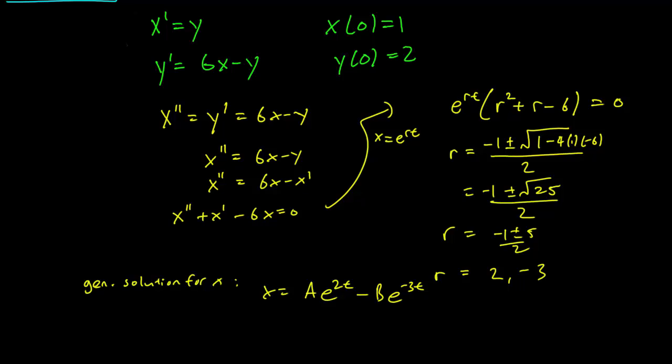And we can also find a way to get our y. Remember that y equals x prime. So y equals x prime, and so y is equal to the derivative of this is just 2A e to the 2t. The derivative of the second thing is just going to be a minus and a minus cancel out, so you get plus 3B e to the minus 3t.